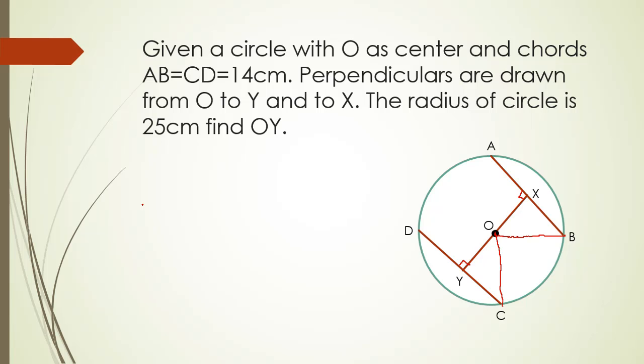Now, if you remember, we have done theorem 2, the converse part. If we draw a perpendicular from the center of the circle to the chord, then it bisects the chord. So we are given AB and CD to be 14 cm. Since OX bisects the chord, we have AX equal to XB equal to 7 cm. Similarly, CY equals DY equals 7 cm.